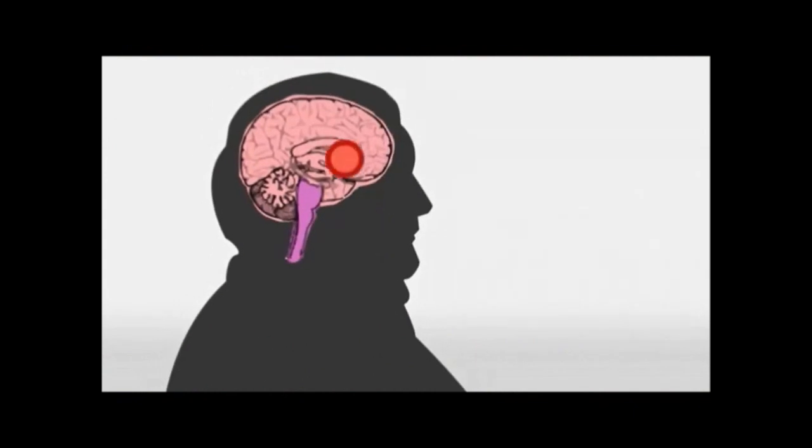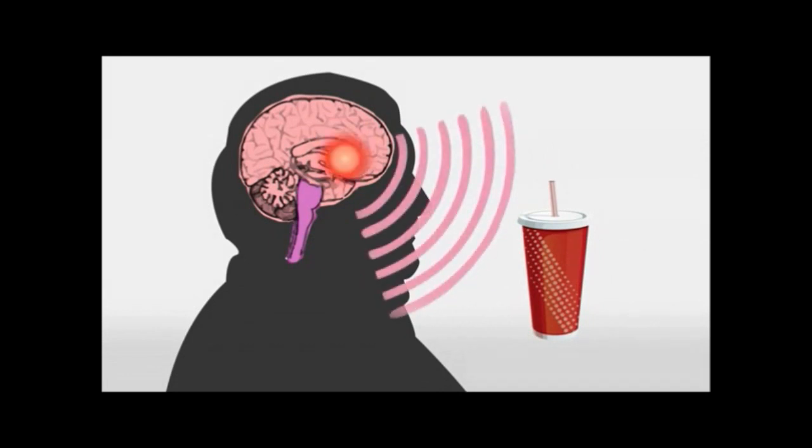We know that the brains of people with obesity do respond differently to food. In that reward center, when they see palatable food, some parts of the brain light up a lot, that wanting part.